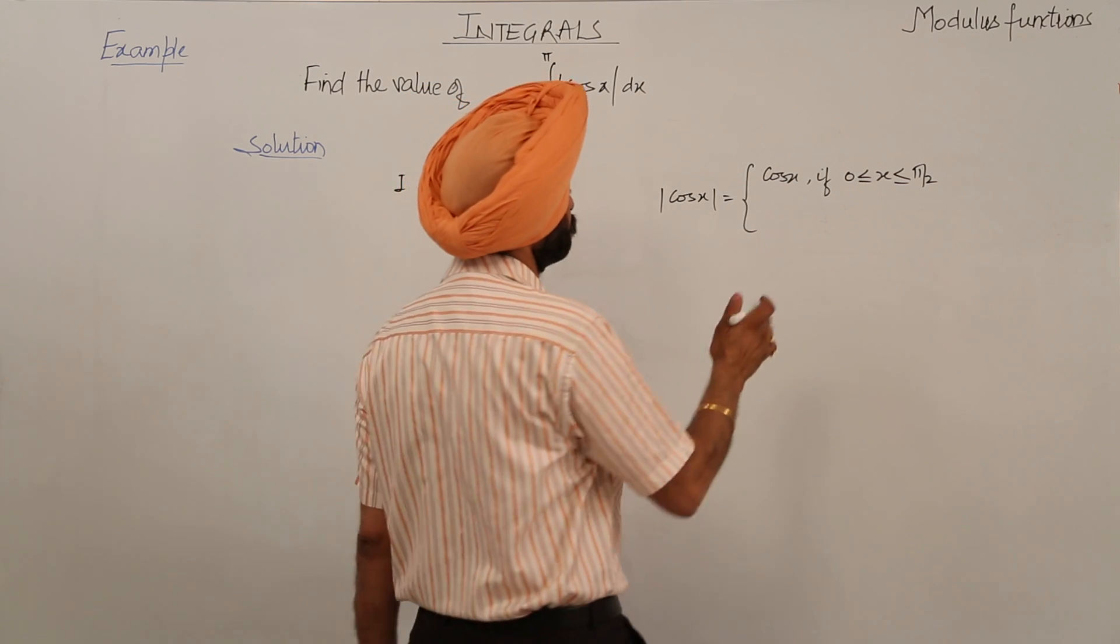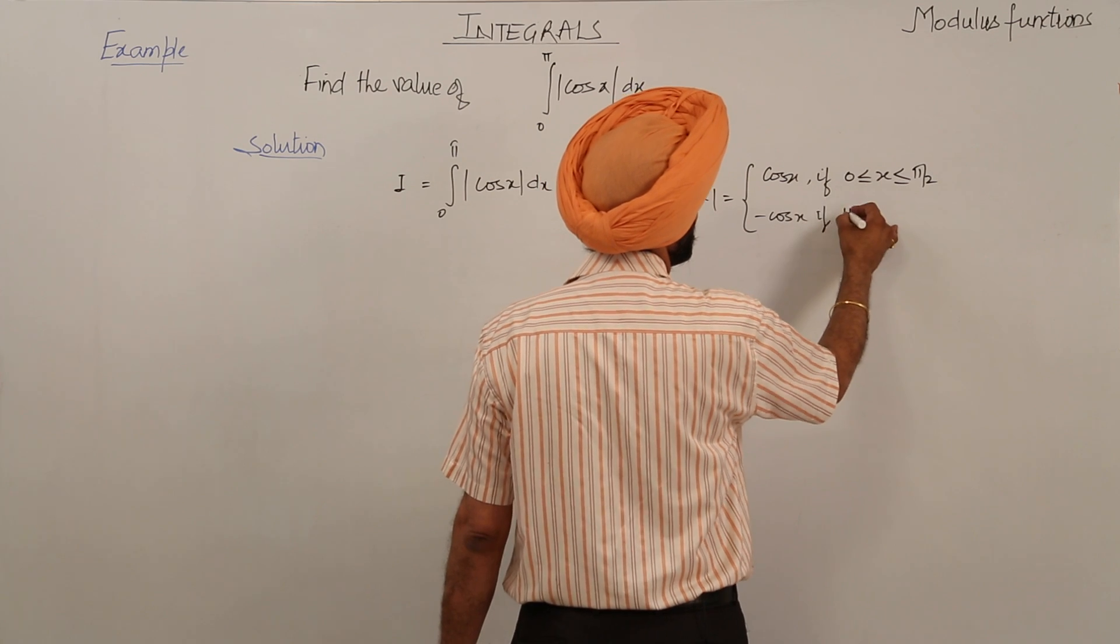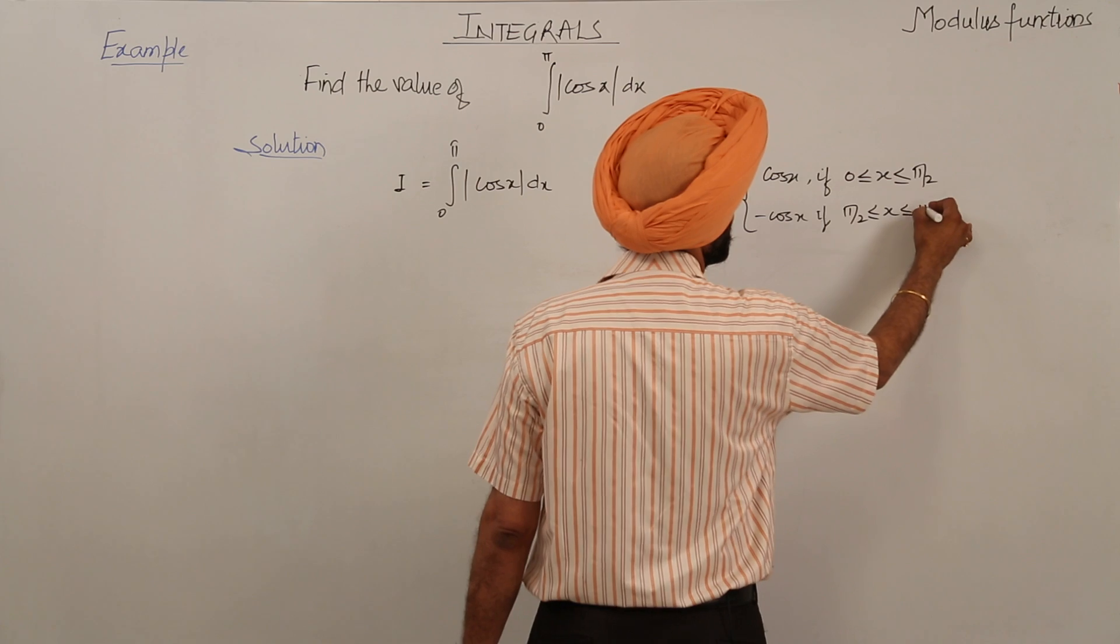We're going from first and second quadrant both. And it's negative cosx if pi by 2 is less than or equal to x is less than or equal to pi.